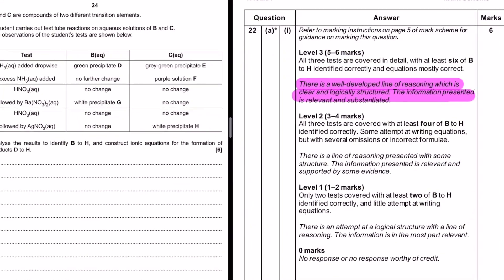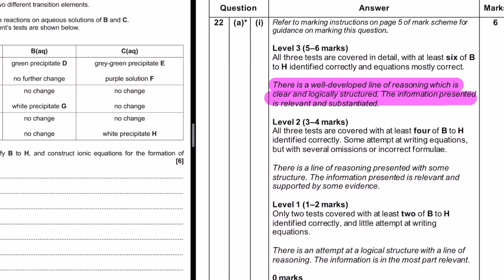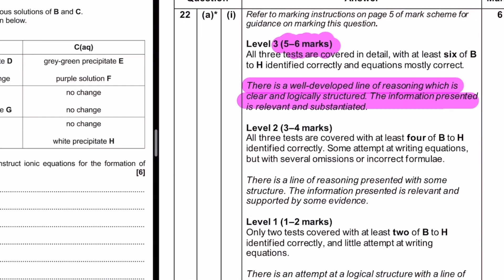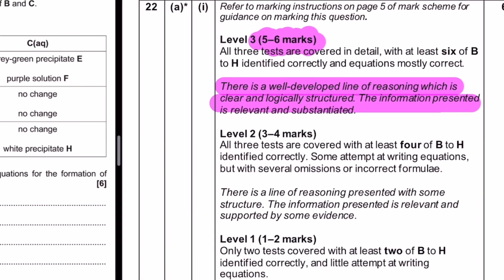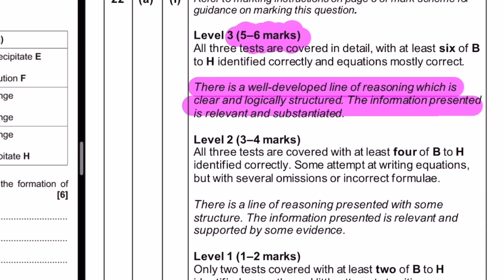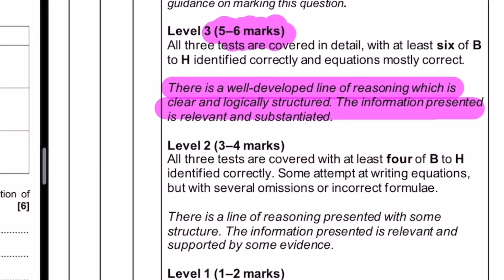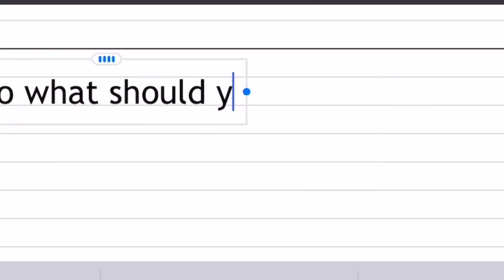So, what is this italic section they're referring to? Take this example from 2020. In the level three answer, it says, there is a well-developed line of reasoning which is clear and logically structured. The information presented is relevant and substantiated.